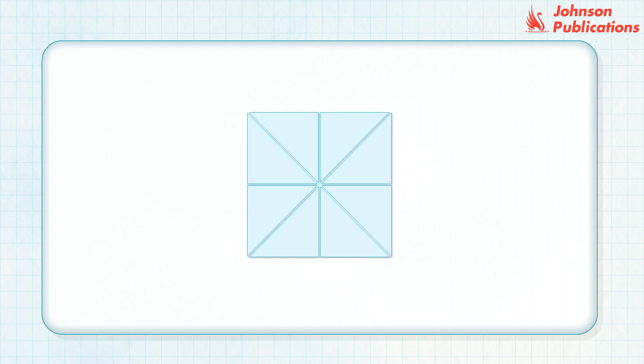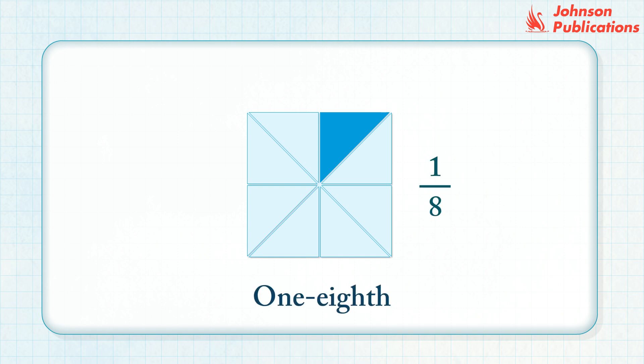Look at this shape. The square shape is divided into eight equal parts. One out of eight parts is colored, so the fraction is written like this and is read as one eighth.